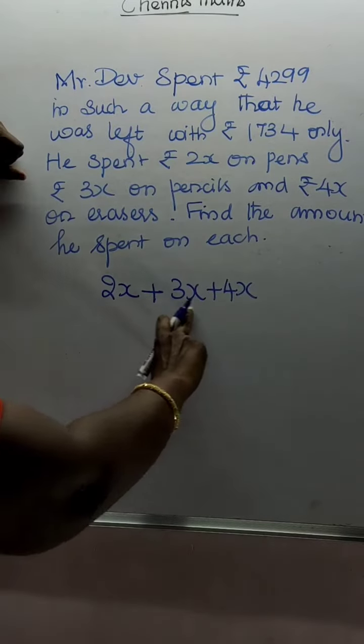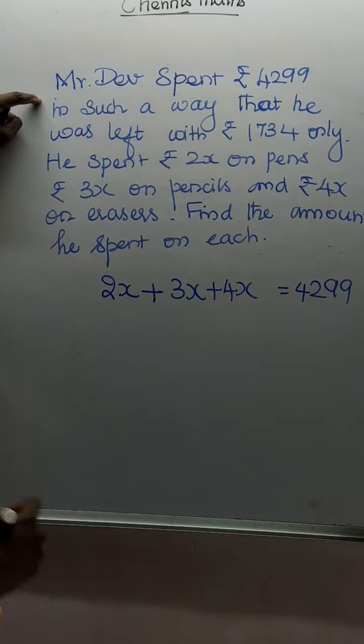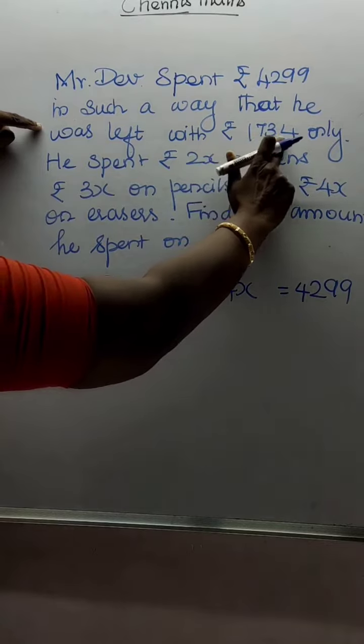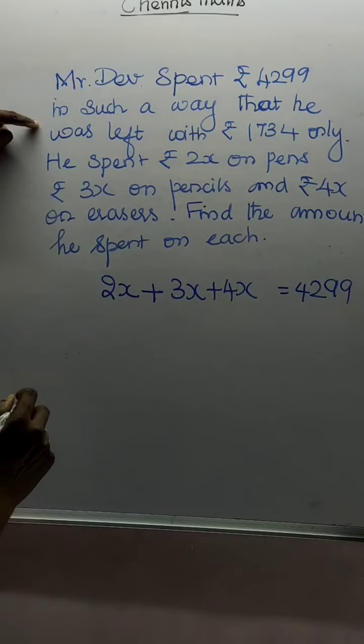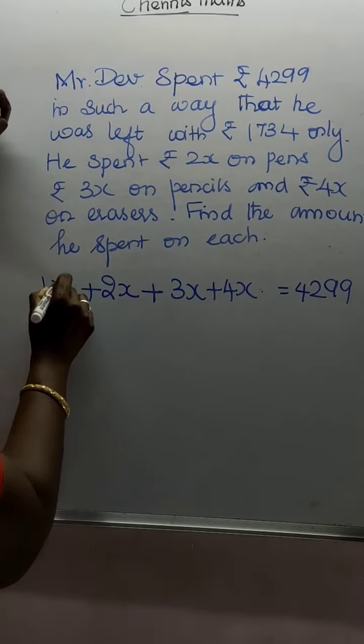So he spent 4,299, but he is having 1,734 remaining. So 1,734 will be added there.